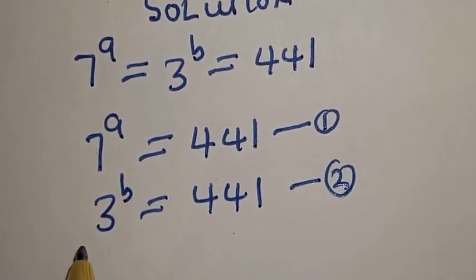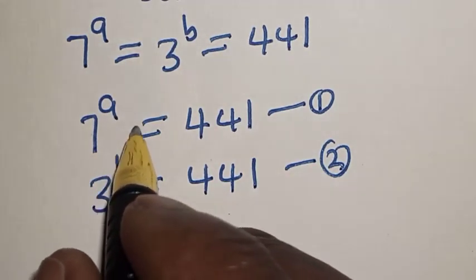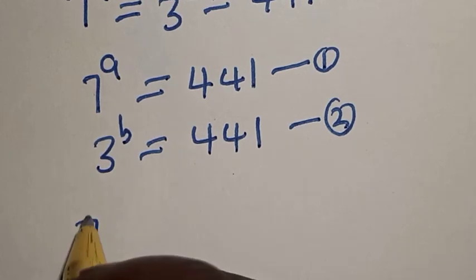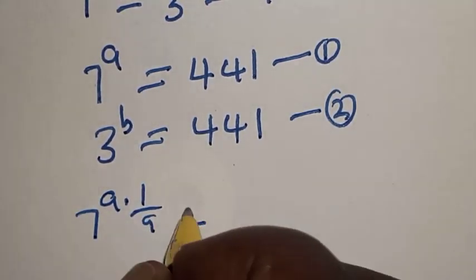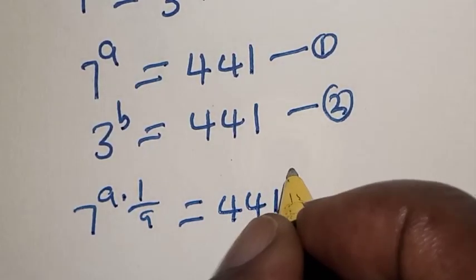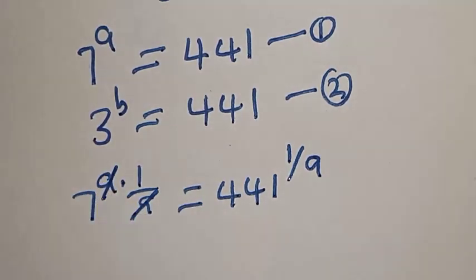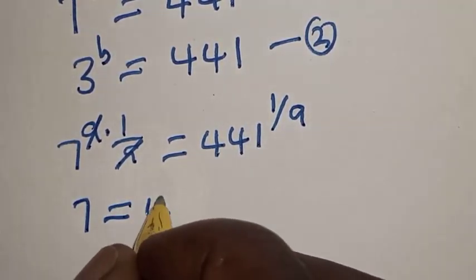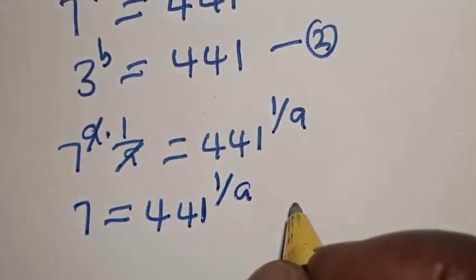From equation 1, let's multiply the exponent of both sides by 1 over a. That is, 7 raised to power a multiplied by 1 over a is equal to 441 raised to power 1 over a. This will cancel, giving us 7 is equal to 441 raised to power 1 over a.